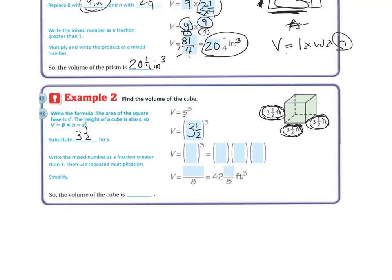So if I take the 3 1/2, I multiply times 3 times 2 is 6, plus the 1 is 7, so I'm going to get 7 over 2.